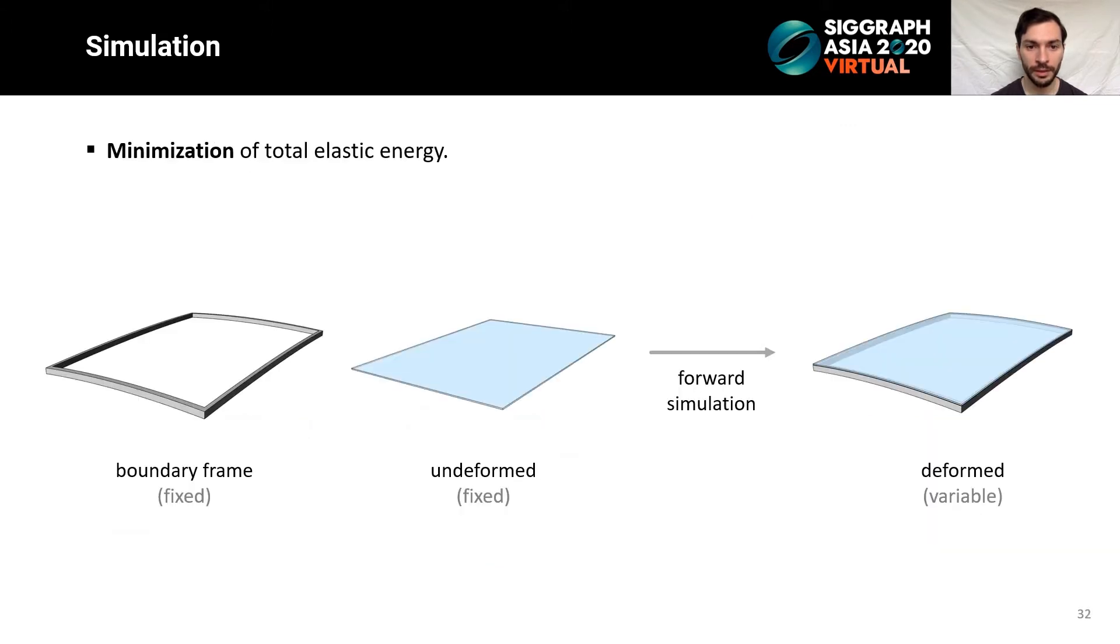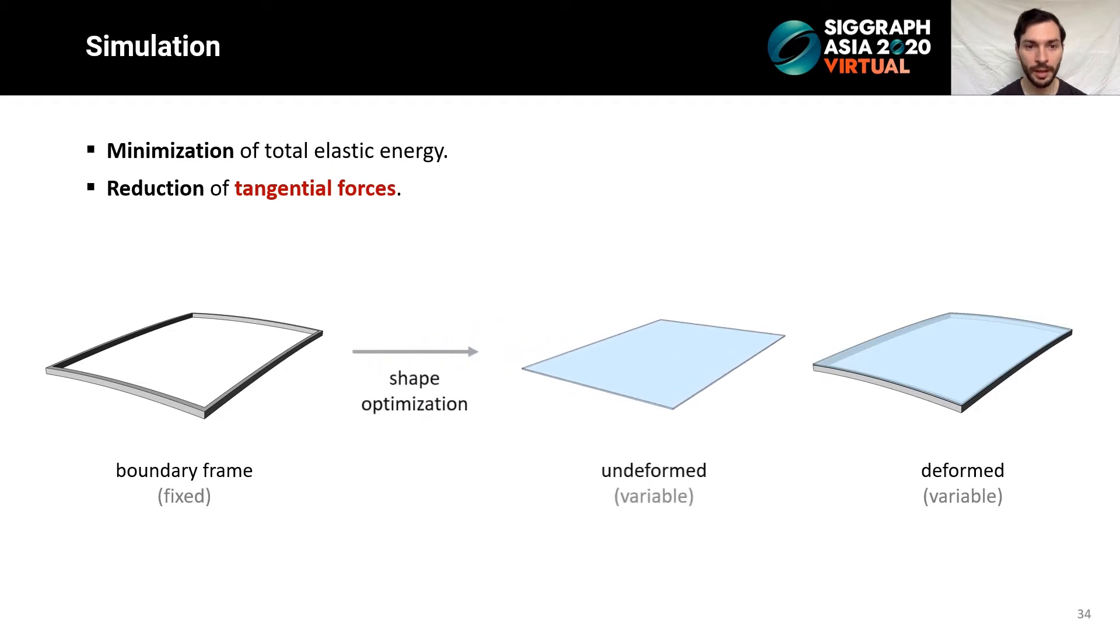For given boundary conditions and undeformed panel, forward simulation is in essence minimization of the total elastic energy with respect to the deformed shape. However, in practical fabrication, it is very difficult to apply tangential forces to the boundary of the panels, and we aim to minimize such forces. This can be achieved by minimizing the total elastic energy, while both deformed and undeformed shapes are variable. A panel optimized in this scenario will be referred to as a minimal energy panel or a panel conforming to its boundary. As mentioned earlier, it is a computationally costly routine, and we use it only to collect data for training and to generate the undeformed panel shapes for a final facade design.